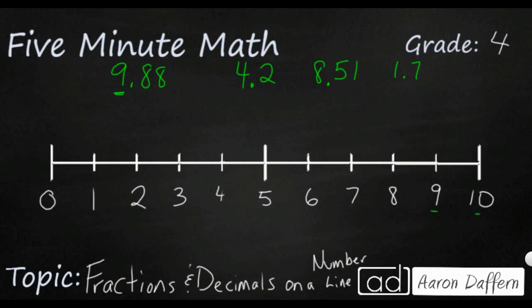So 9. So it's between 9 and 10. And we're going to look at the hundredths place. This goes to the hundredths place is 88. So 88 out of 100. That's going to be really close to the next whole number. So we're going to put that close to 10. So 9.88 or 9 and 88 hundredths goes close to 10.